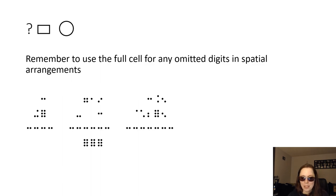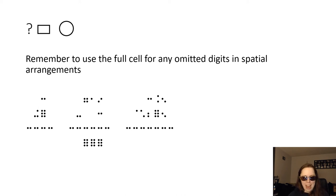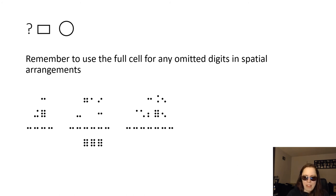Throughout the context of spatial arrangements, if there is anything that's omitted — whether shown with a question mark, a box, a circle, or some other kind of blank on a children's worksheet — in Nemeth, blanks that need to be filled in or figured out are represented with a full cell. Use a full cell.